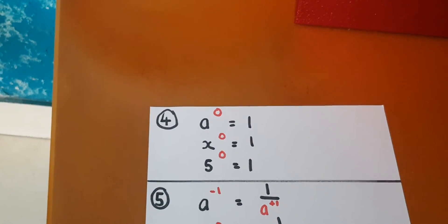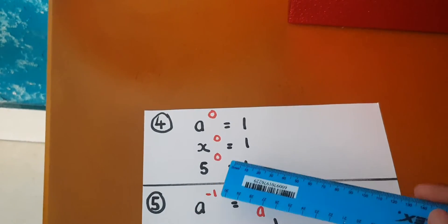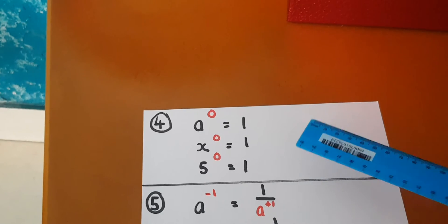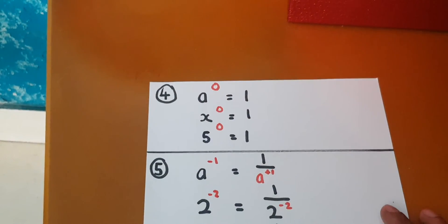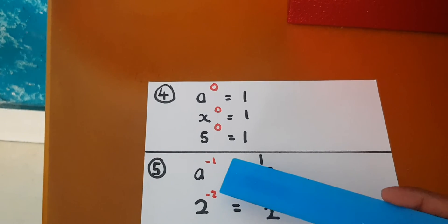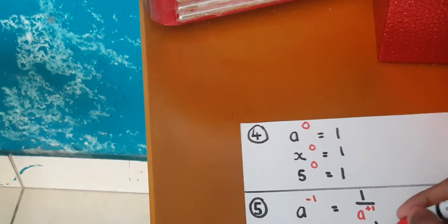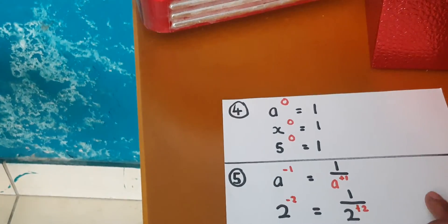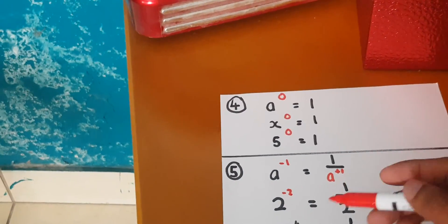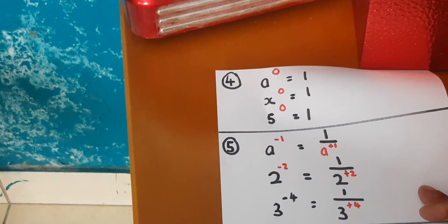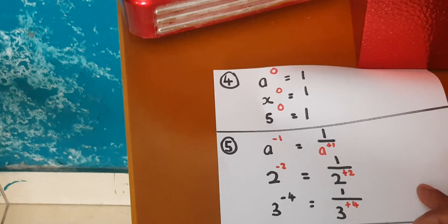The fifth law: any base to the power minus one is equal to one over the base to a positive number. For example, two to the power minus two is equal to one over two to the positive two. Another example: three to the power of negative four is equal to one over three to the power positive four.